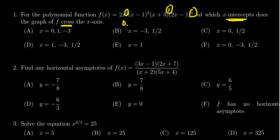So the intercepts we're looking for are 0, negative 3, and 1 half, which then leads us to choose option f.